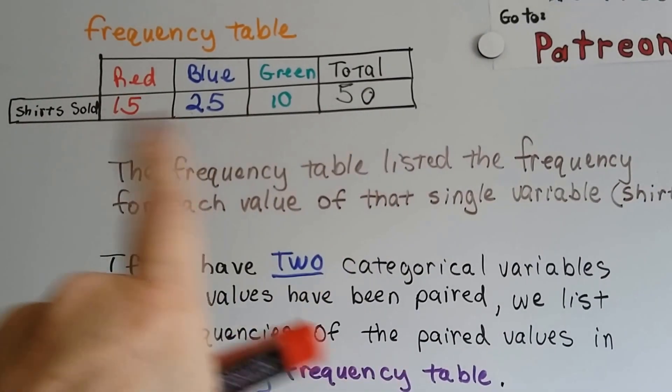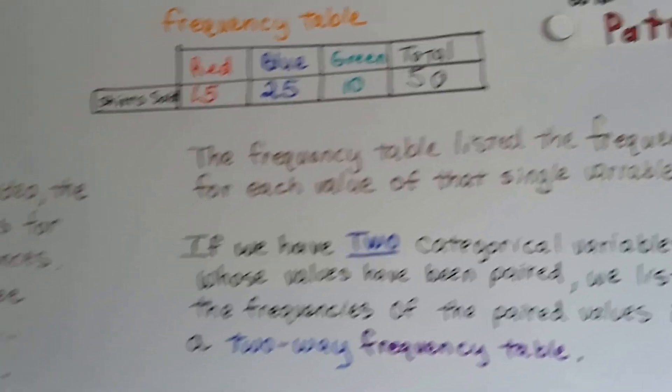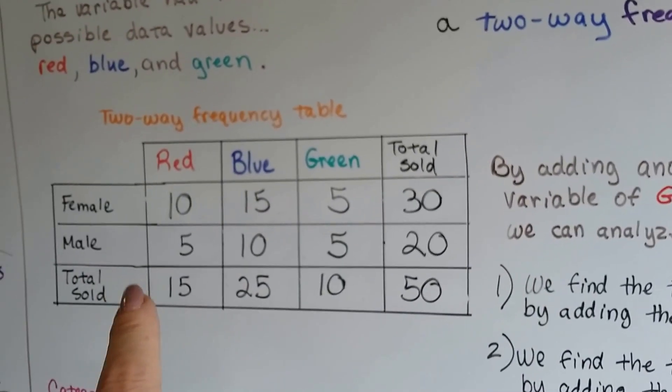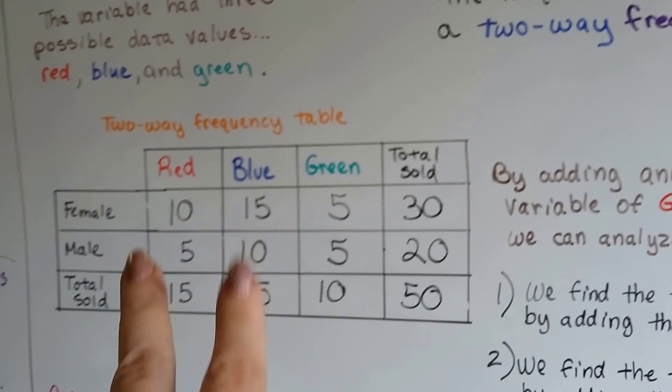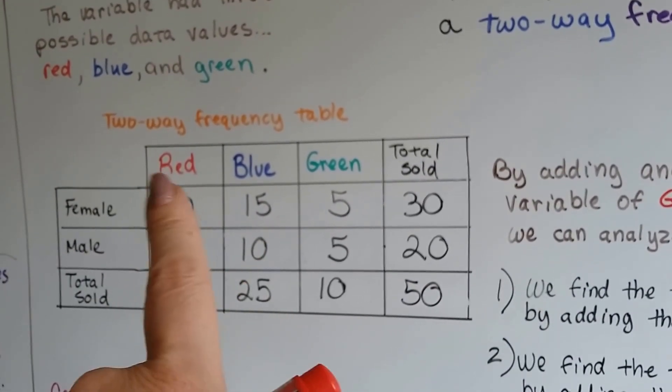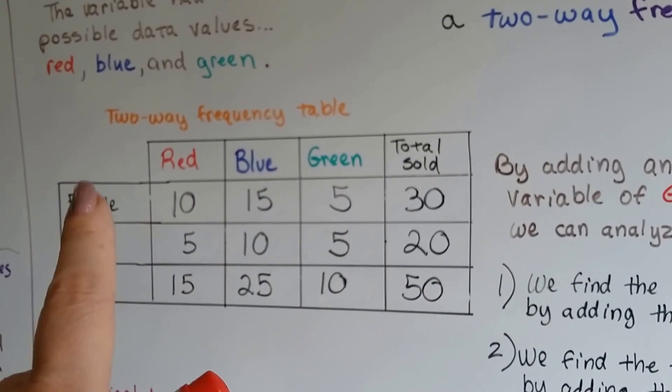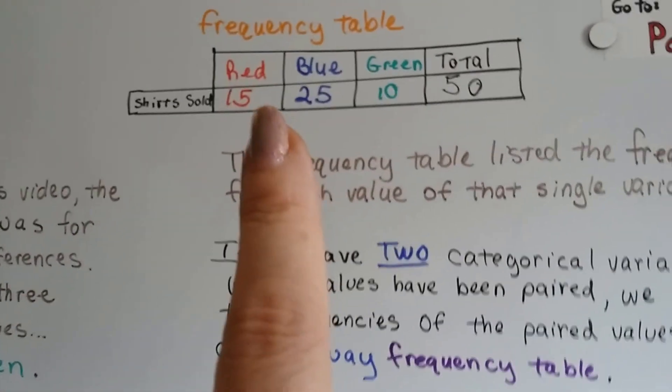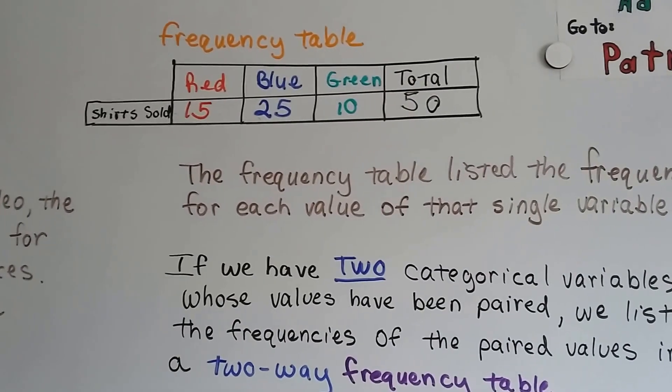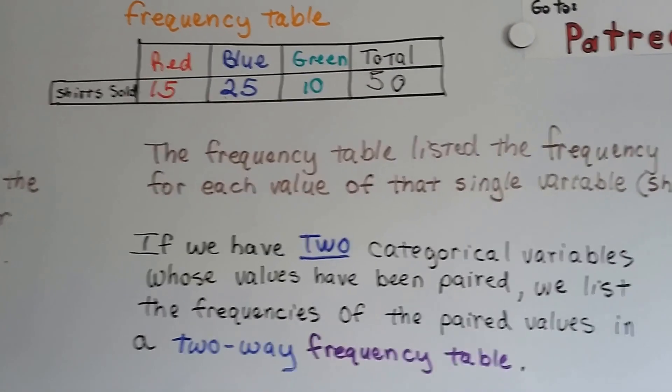A two-way frequency table has two categorical data values. So now we have red, blue, and green, and female and male that it was sold to. We added another bit of information, another bit of data, another category.